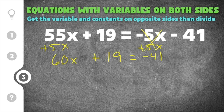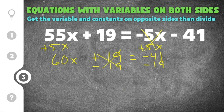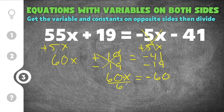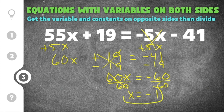Now we have to get the constants on the opposite side of the variable. We have 60x plus 19 on this side, so we have to get rid of this 19. We subtract 19 because the opposite of plus 19 is minus 19. We also have to subtract 19 from the other side to keep the equation balanced. Negative 41 minus 19 is negative 60, and then 60x comes straight down. Now this is like saying 60 times x — we have to undo that, so we divide by 60. Those 60s cancel, leaving just x, and negative 60 divided by 60 is negative 1. So our solution is x equals negative 1.